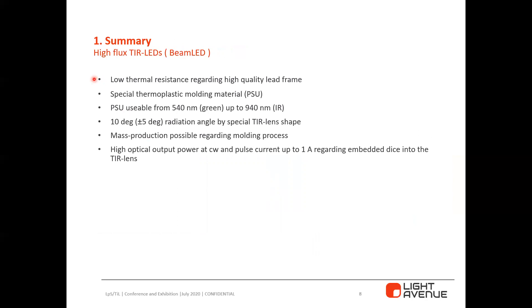We have low thermal resistance regarding the high-quality lead frame, and a special thermoplastic molding material — PSU — usable from 540 to 940 nm, from green to infrared. We have 10-degree radiation angles by the special TRR lens shape, with tolerance of ±5 degrees depending on chip size. Mass production is possible via the molding process, and there is high optical output power at CW and pulse current due to the embedded die in the TRR lens without any air gaps.